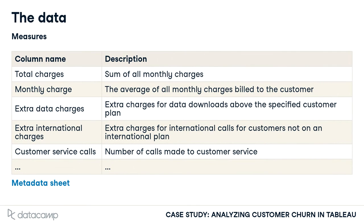The total charges column, for example, takes the sum of all monthly charges billed to a customer. You can see the description of the other columns in here too, but they can all be found in the metadata sheet. You can download this sheet on the course overview page, or use the link in the first hands-on exercise.